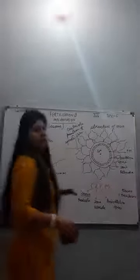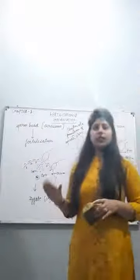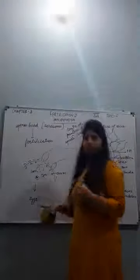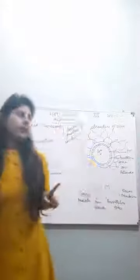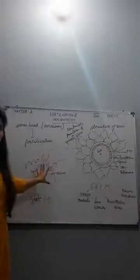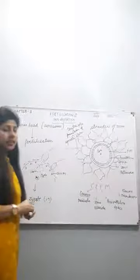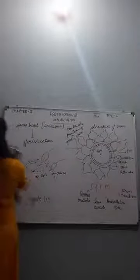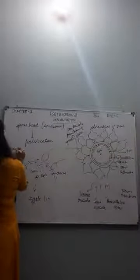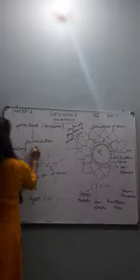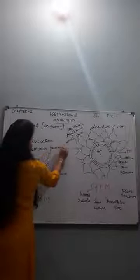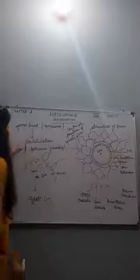The zygote divides further inside the fallopian tube. An important point is the specific site where fertilization occurs: it takes place at the ampullary-isthmic junction of the fallopian tube. You need to learn this specific location carefully.